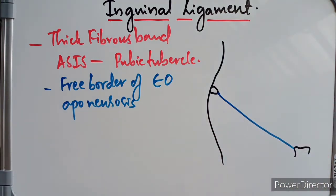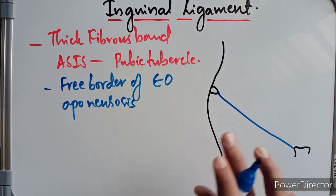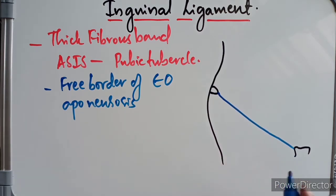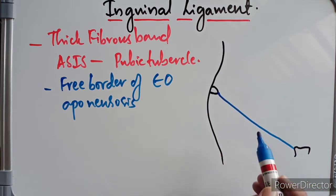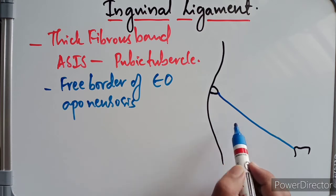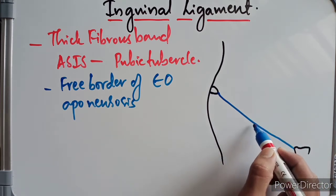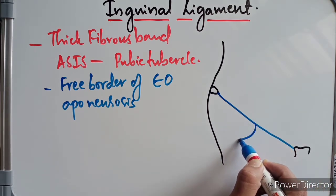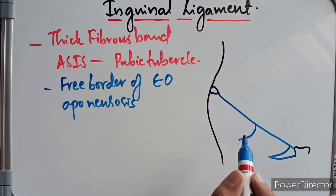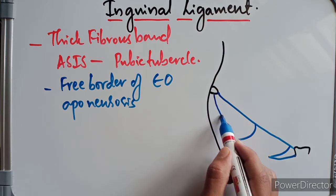The aponeurosis of the external oblique is thickened and folded backward on itself to get attached there. Thus the lower aspect of the ligament is round while its upper aspect presents as a groove. Just below the inguinal ligament we have the ilioinguinal ligament, and then we have the pectineal ligament.